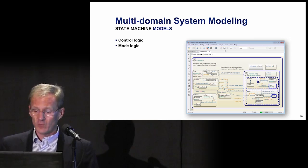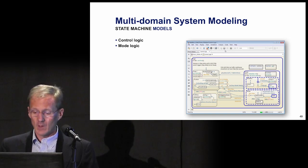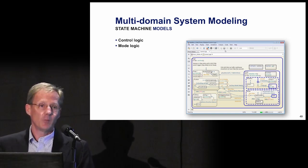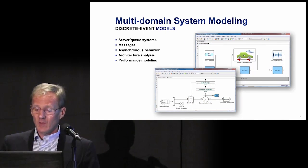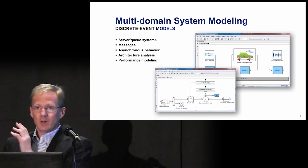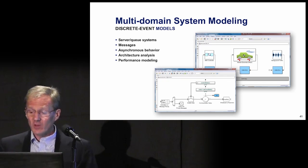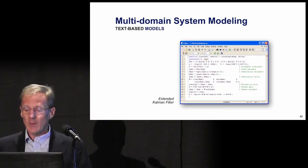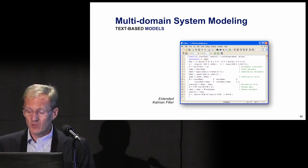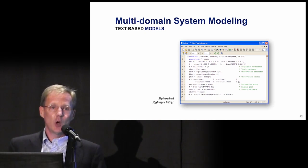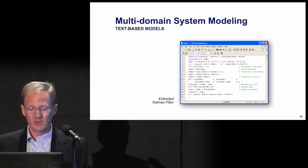The fourth domain is state machine models. State chart notation describes control and mode logic, like this diagram of an automobile power window controller. This type of logic actually accounts for a large percentage of embedded software found in automobiles, airplanes, and other devices. The fifth domain is discrete-event modeling. These modeling elements include messages, servers, and queues, and can be used to model computer networks and buses with network packet queues — important in cars with CAN buses. The sixth and last domain is text-based code models. Some elements of system models are simply best described with text code. The example here is a model of an extended Kalman filter in only 16 lines of MATLAB code — the Kalman filter is most naturally described using textual matrix operations.